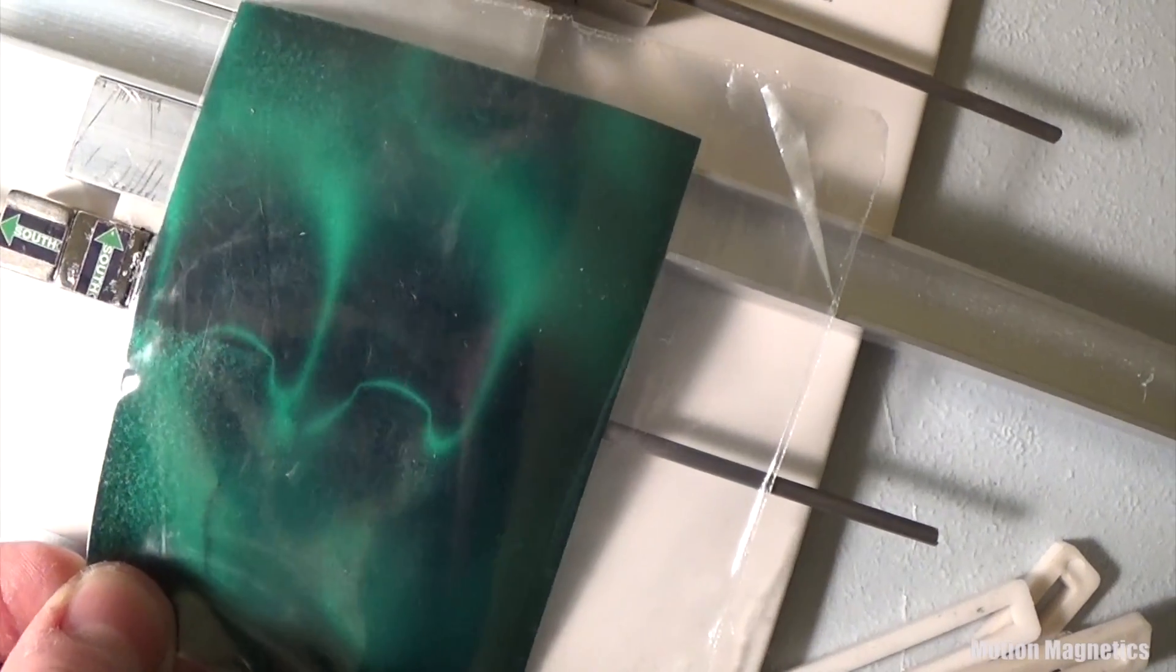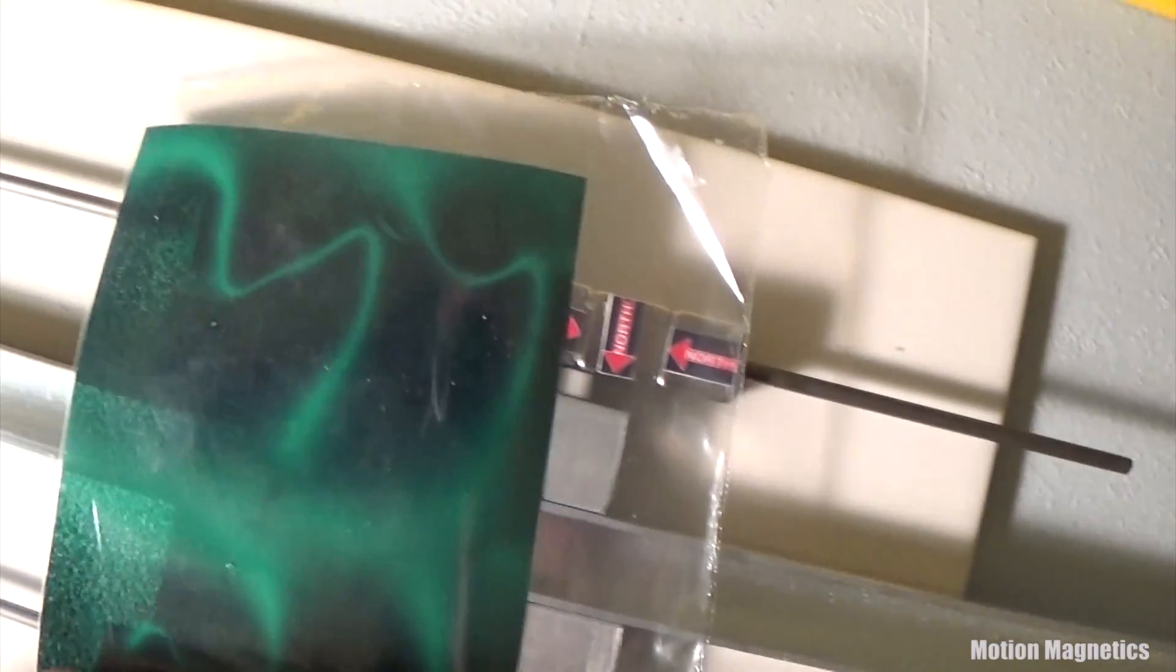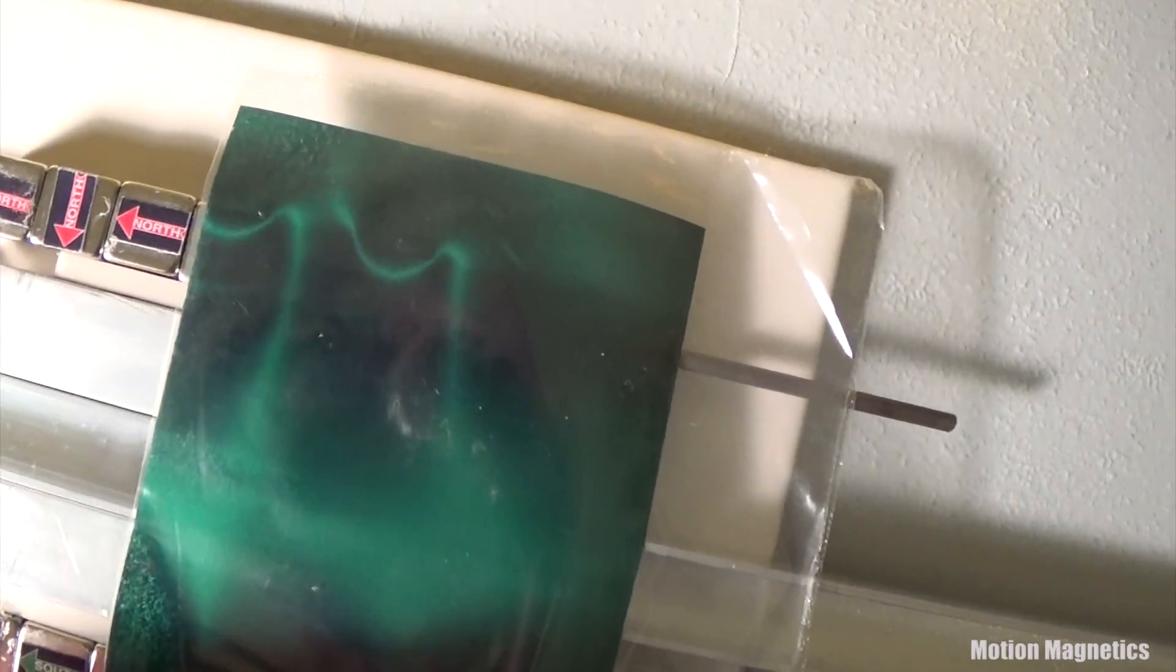If you use magnetic film it's quite easy to see the Halbach Array effect demonstrated. The magnetic field lines are barely visible on one side of the array while highly pronounced on the other.